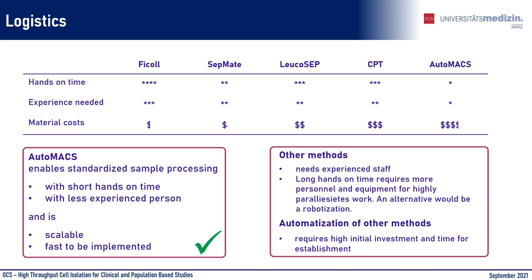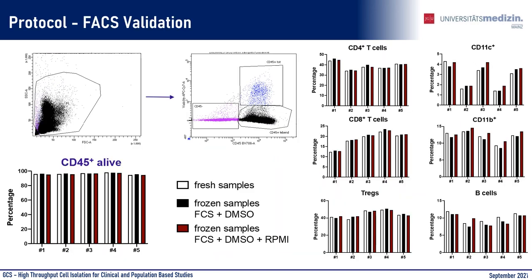Especially for this high throughput, we had to weigh the advantages and disadvantages of different isolation methods. The high standardization of the process — which can also be carried out by relatively inexperienced personnel — made us choose this method. We did a small validation experiment in cooperation with our Institute of Immunology. We tested fresh samples and frozen samples, different freezing media and procedures, and looked at the quality of the cells via flow cytometry analyzers — checking cell composition: CD8, CD4, CD11b, B cells, T-reg — and on the left side, the viability of CD45-positive cells.